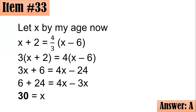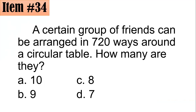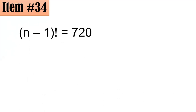Item 34: A certain group of friends can be arranged in 720 ways around a circular table. How many are they — 10, 9, 8, or 7? This involves circular permutation, and the formula is (n minus 1) factorial. The value is 720 and our goal is to solve for n.